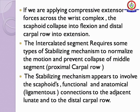If you are applying a compressive extensor force across the wrist complex, the scaffold collapses into flexion and the distal carpal row into extension. The intercalated segment requires some type of stabilizing mechanism to normalize the motion and prevent the collapse of the middle segment.